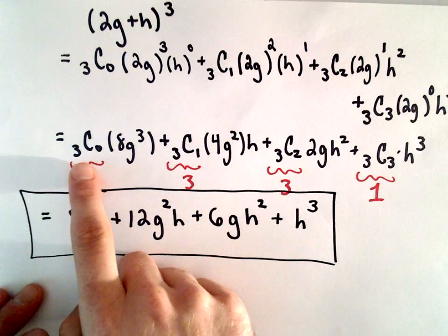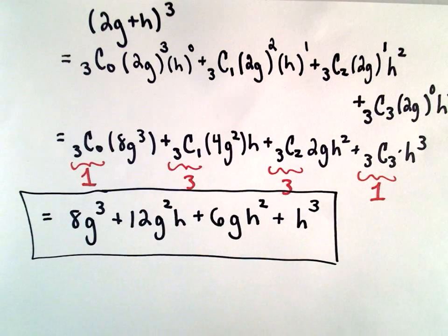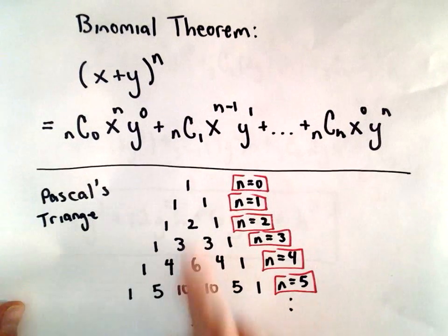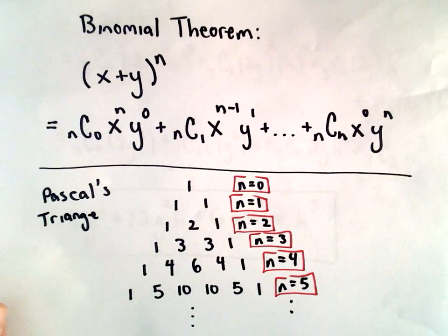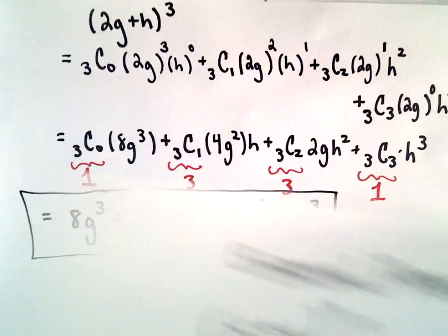Of course, you could always just use the combinations formula involving factorials, but certainly Pascal's triangle is a nice, quick way to find those values without using all of the factorials.